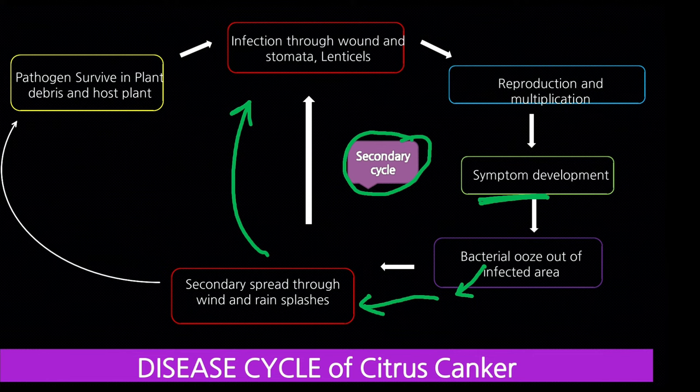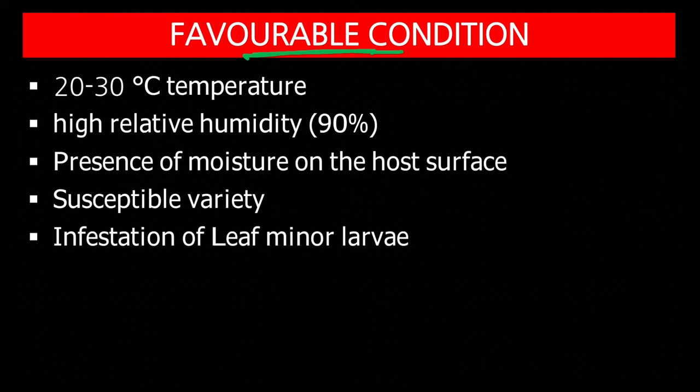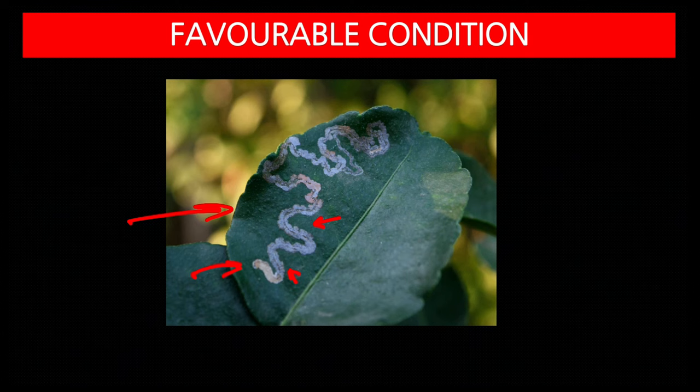The bacteria can also survive in infected plants continuously. Favorable conditions for the disease are: 20 to 30 degree centigrade temperature, high relative humidity, presence of moisture on the host surface, susceptible variety, and infestation of leaf miner larvae. The leaf miner infection increases the severity of the disease.